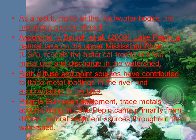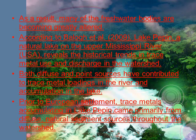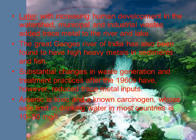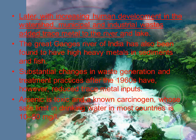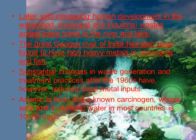Prior to European settlement, trace metals accumulating in Lake Pepin came primarily from diffuse natural sediment sources throughout the watershed. Later, with increasing human development, municipal and industrial wastes added trace metals to the river and lake. The Great Ganges River of India has also been found to have high heavy metals in sediments and fish. Substantial changes in waste generation and treatment practices after the 1960s have, however, reduced trace metal inputs.